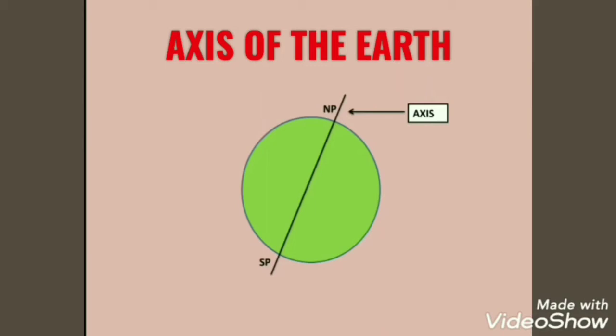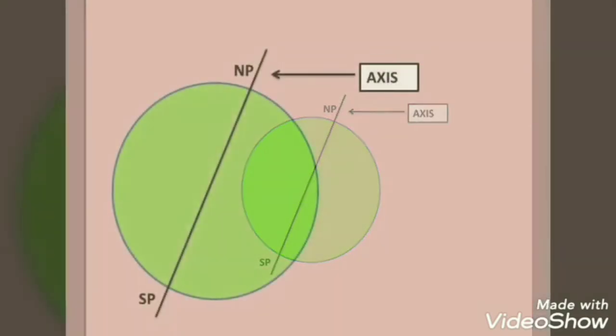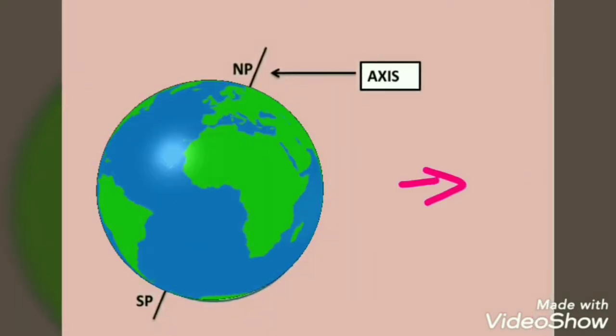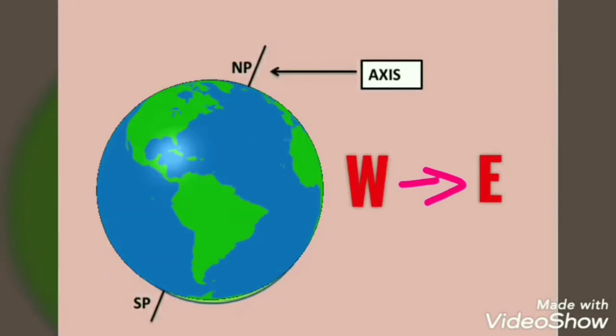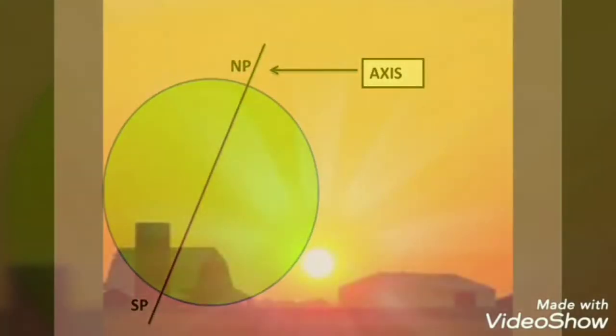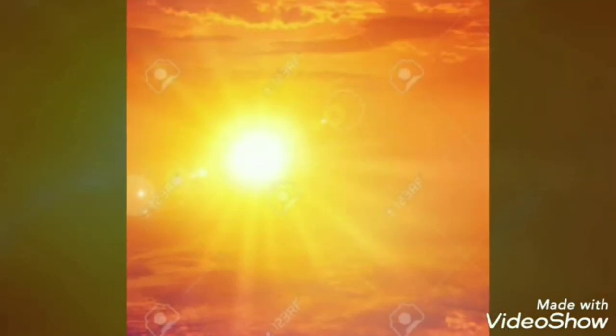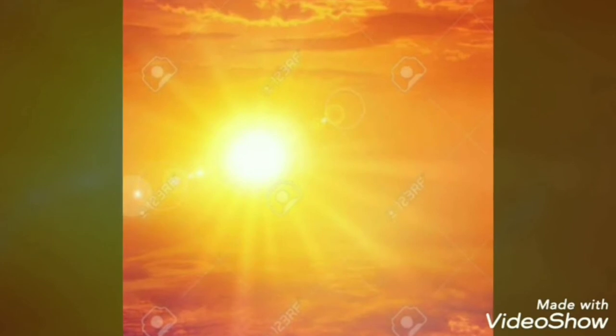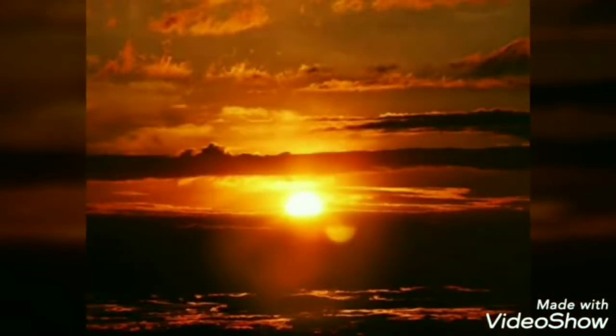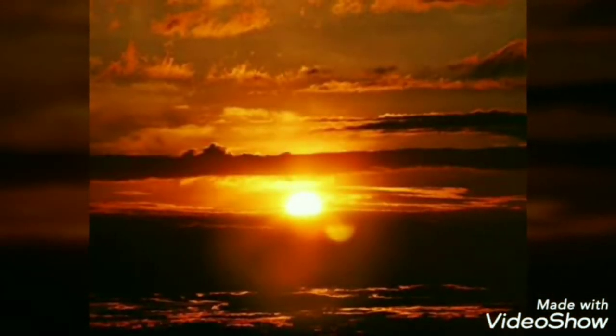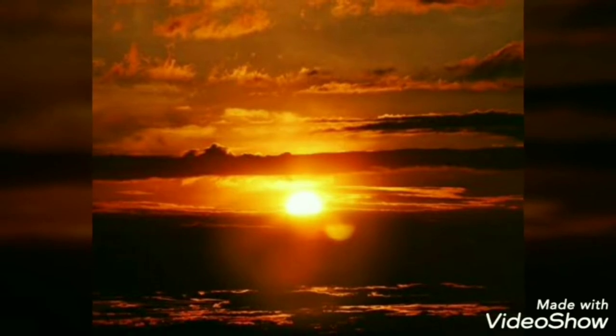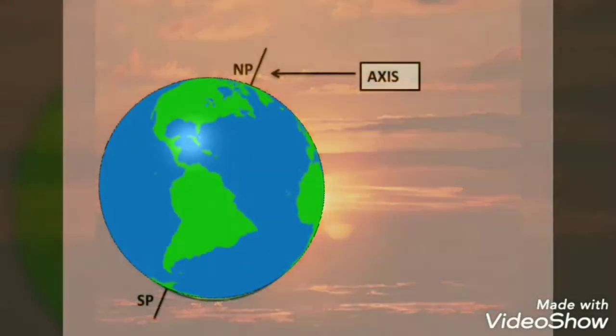You can also notice that the direction of the earth's movement is west to east or anti-clockwise, and this is the reason every morning we see the sun rising in the east, traveling across the sky during the day, and finally setting in the west in the evening. But in reality sun is a static body and it is the earth which moves.